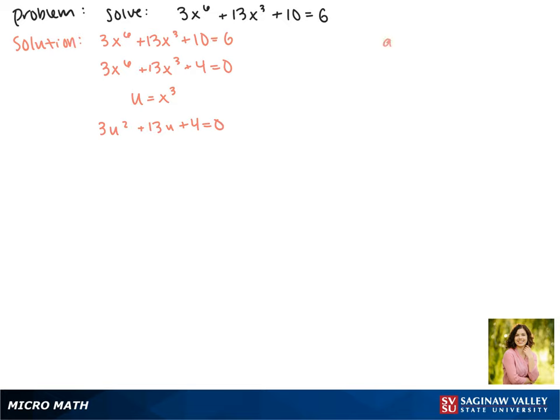So a times c, which is 3 times 4 equals 12. The factors of 12 that make 13 are 12 and 1, so this becomes 3u squared plus 12u plus 1u plus 4 equals 0.